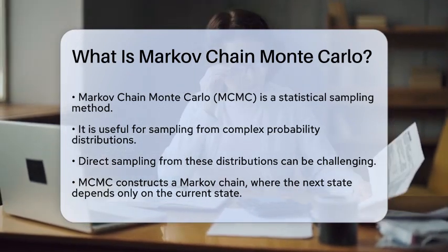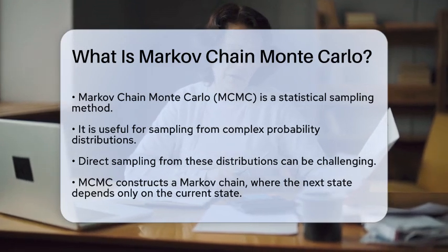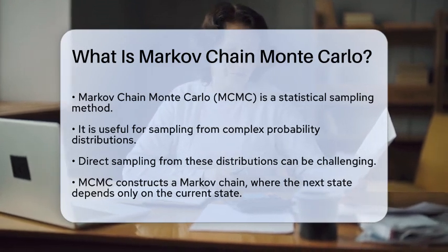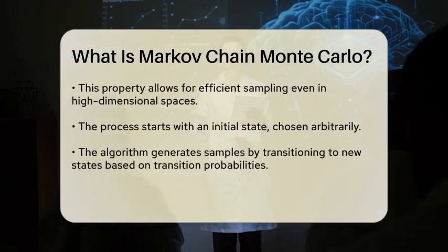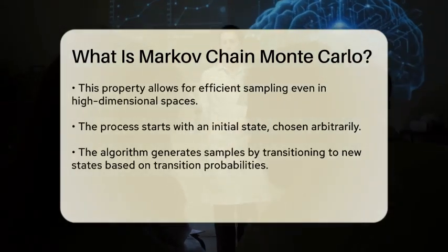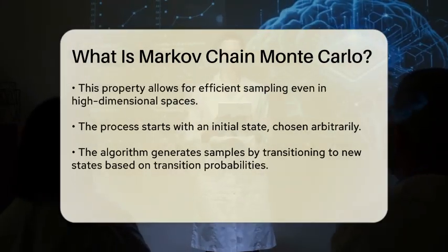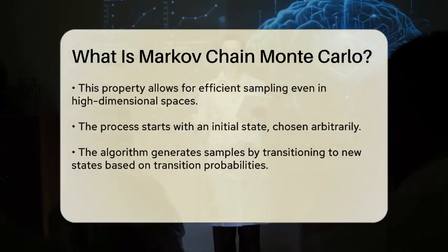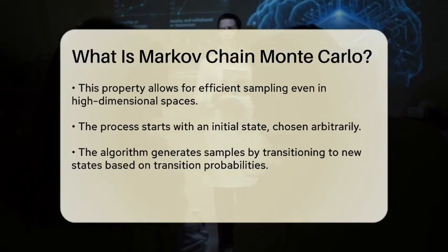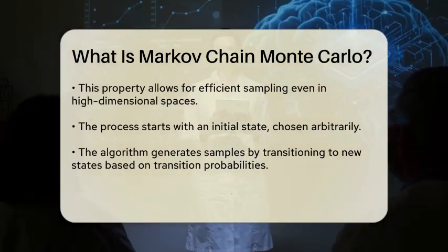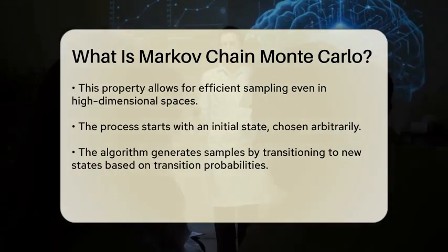Markov-Chain Monte Carlo, often abbreviated as MCMC, is a method used in statistics to sample from a probability distribution when direct sampling is difficult. The technique relies on constructing a Markov-Chain, which is a sequence of random variables where the next state depends only on the current state, not on the sequence of events that preceded it. This property allows for efficient sampling from distributions that may be high-dimensional or complicated.